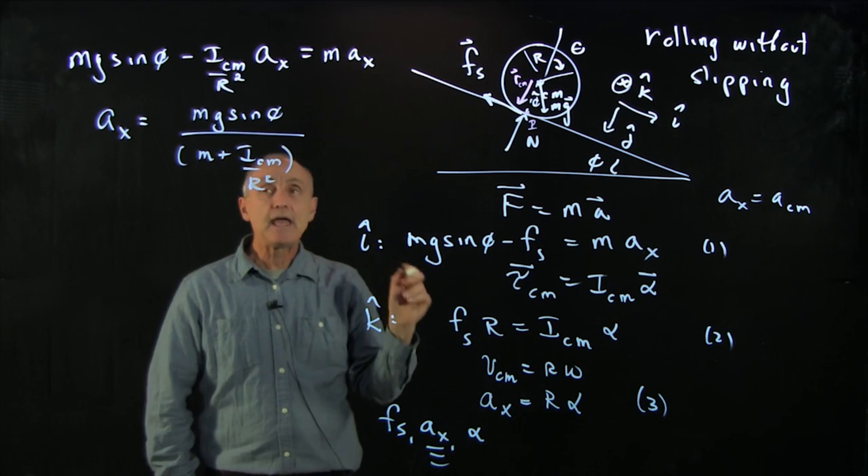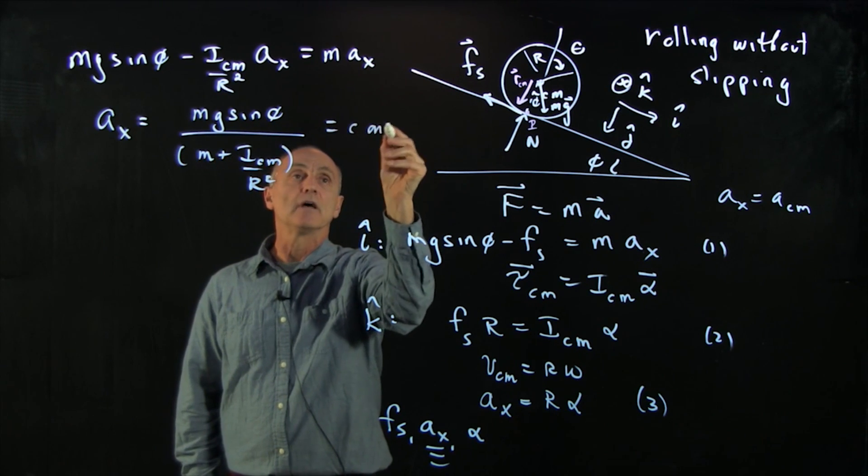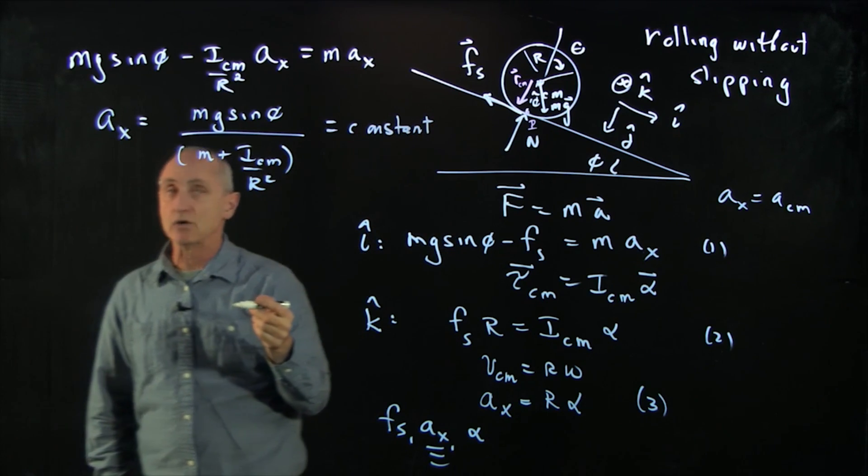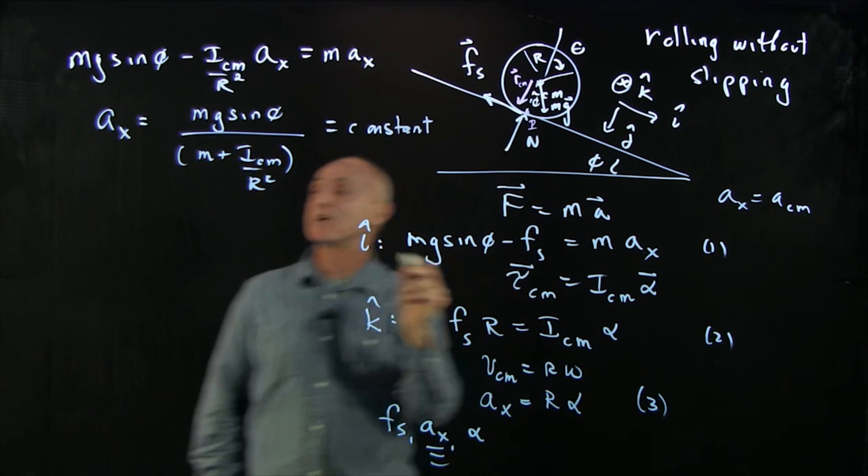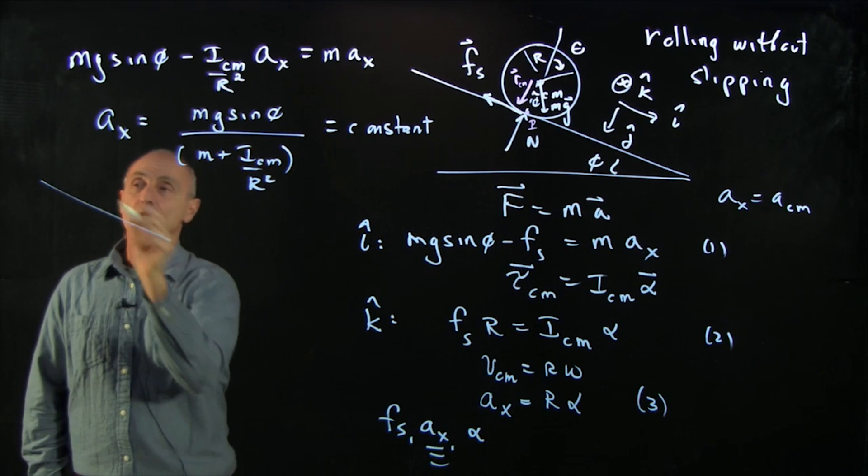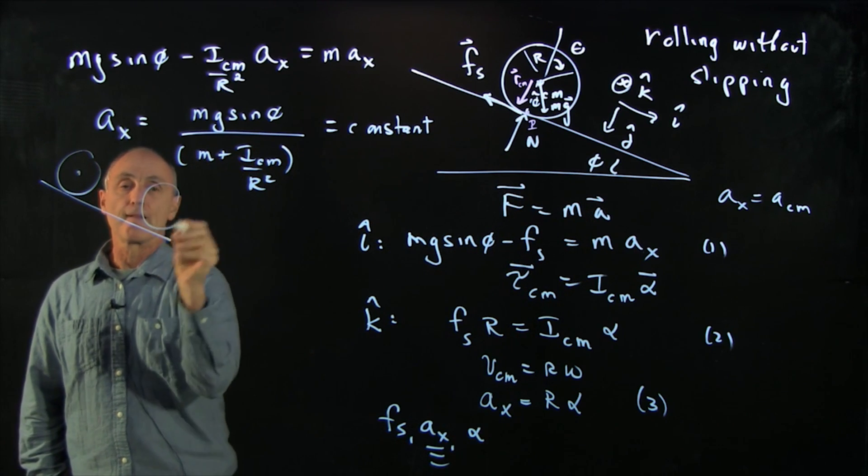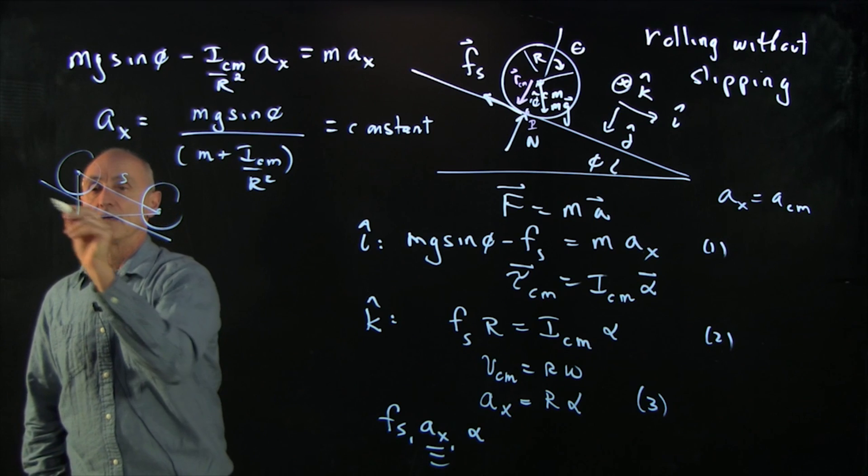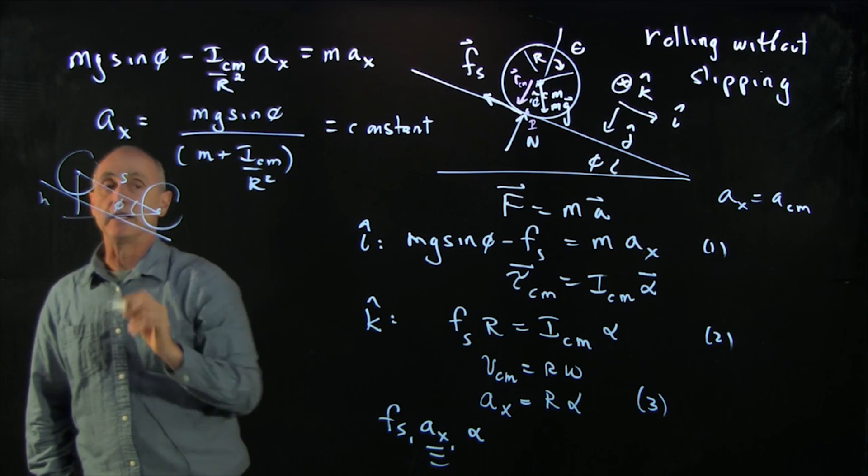Now, ax is a constant. And we can, from our kinematic equations, if our object is moving a distance s as it drops a height h, we know from kinematics,